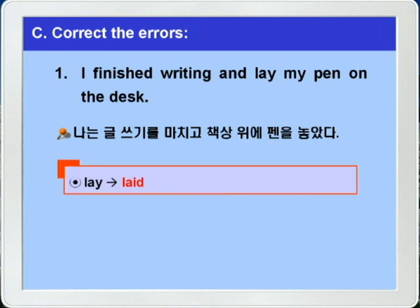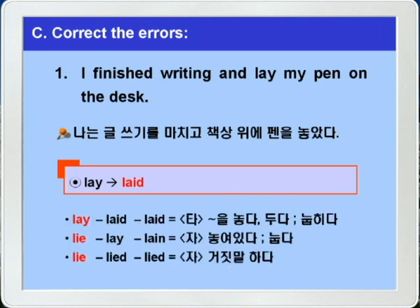다시 한 번 더 lay와 비슷한 동사들을 정리해보면, lay-laid-laid는 타동사로 뭐뭐를 놓다, 두다, 눕히다라는 뜻이고, lie-lay-lain은 자동사로 놓여있다, 눕다라는 뜻입니다. 그리고 lie-lied-lied는 자동사로 거짓말하다라는 뜻이 됩니다. 구분하시기 바랍니다.